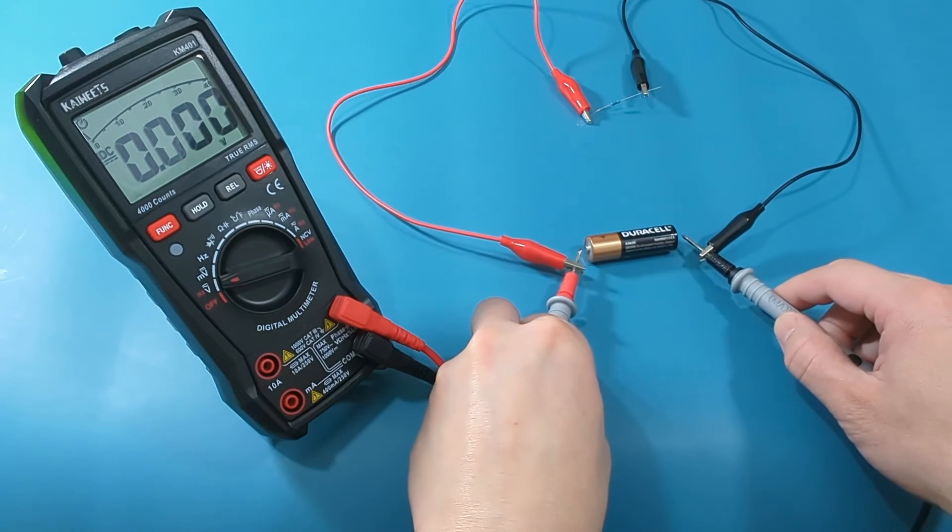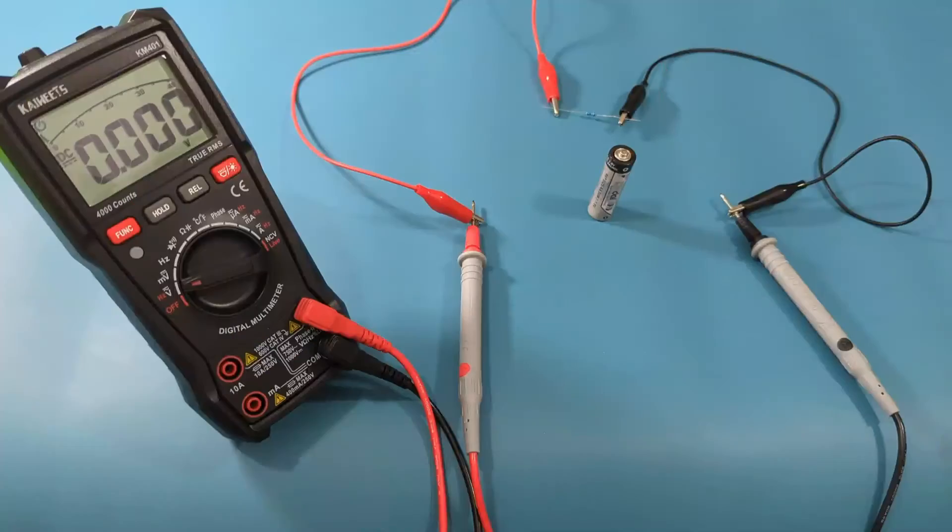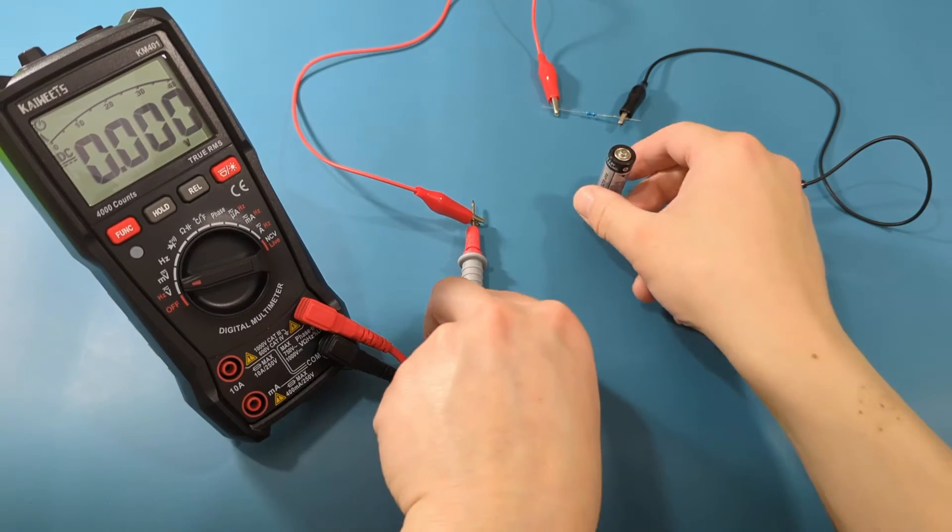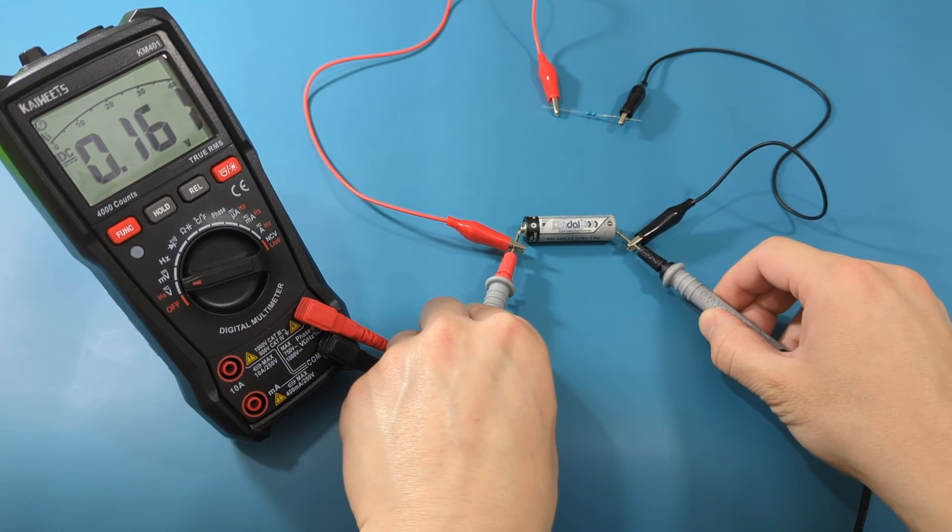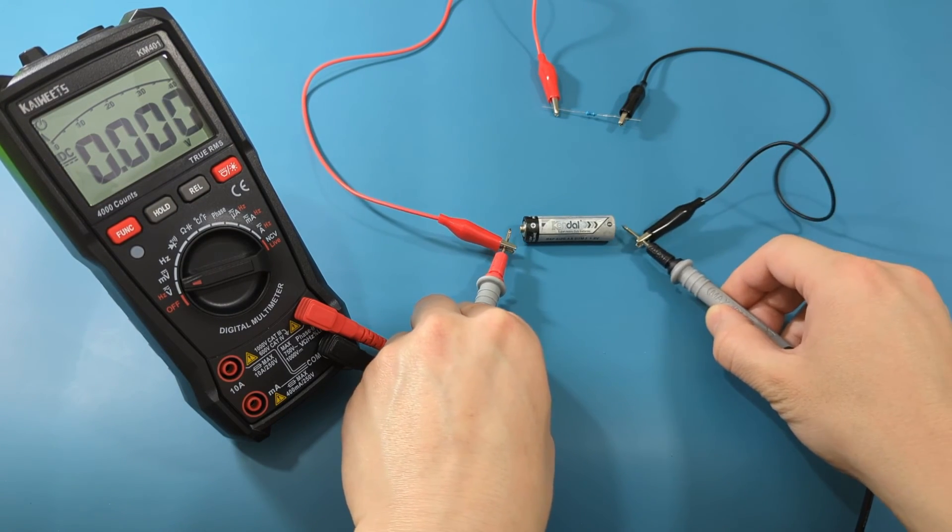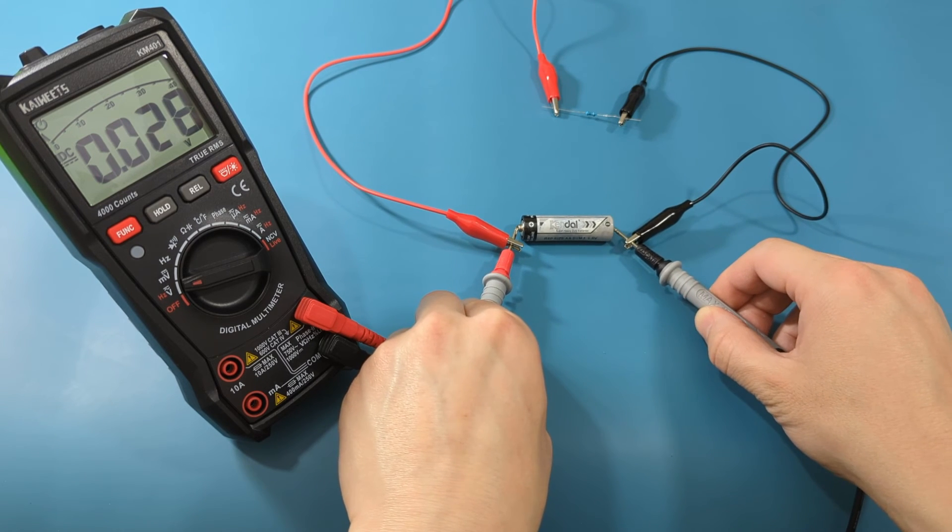As you can see, the reading is slightly lower than the voltage earlier. Let's check the other battery. On the bad battery, it also has a slightly lower reading.